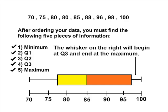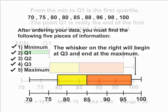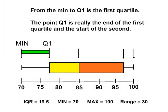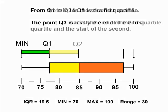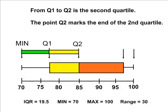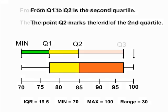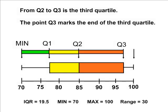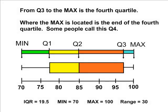Let's quickly review the parts of our box and whisker plot. The first quartile starts at the minimum and ends at Q1. The second quartile starts at Q1 and ends at Q2, which is the median. The third quartile begins at Q2 and ends at Q3. And the fourth quartile starts at Q3 and ends at the maximum. Notice that it takes five points to establish the four quartiles.